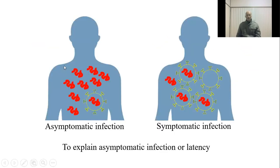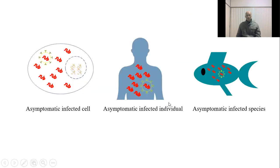The left represents a symptomatic infection — then the individual contains little viral proteins. The right represents asymptomatic infection — this individual contains a lot of viral proteins. Here are different levels of asymptomatic infection, such as asymptomatic infection cells, asymptomatic infection individuals, and asymptomatic infection species.